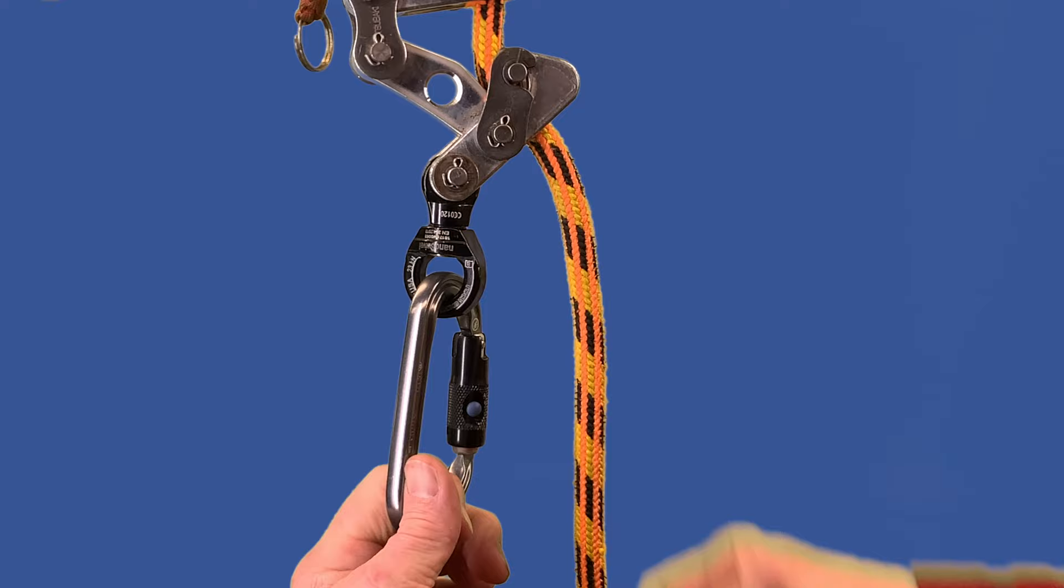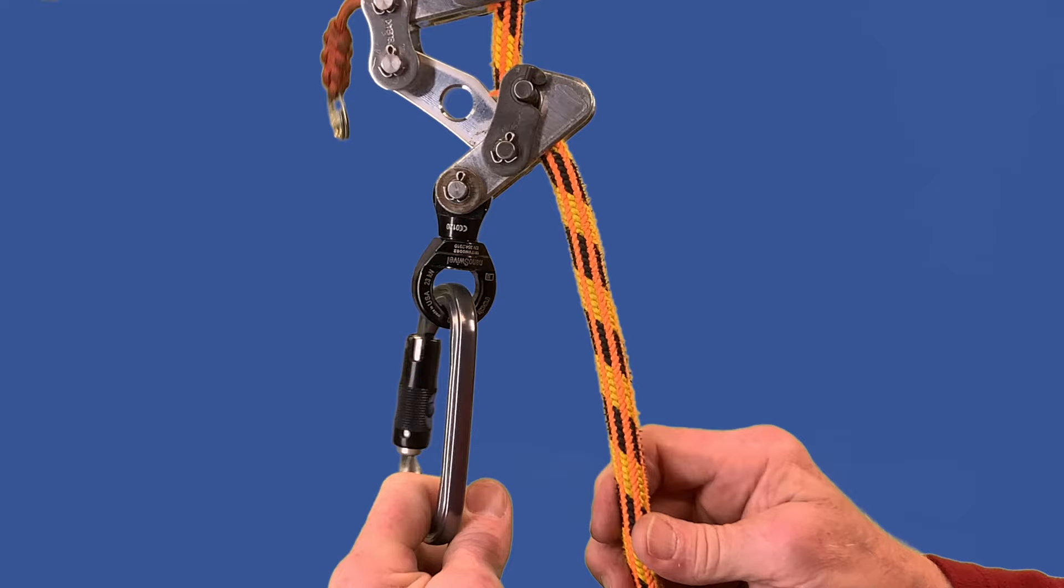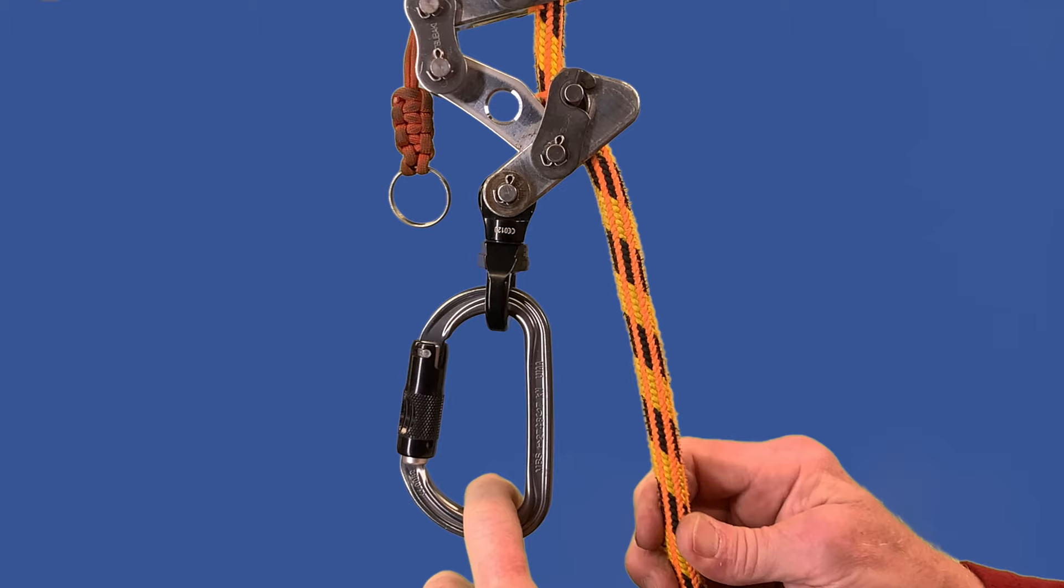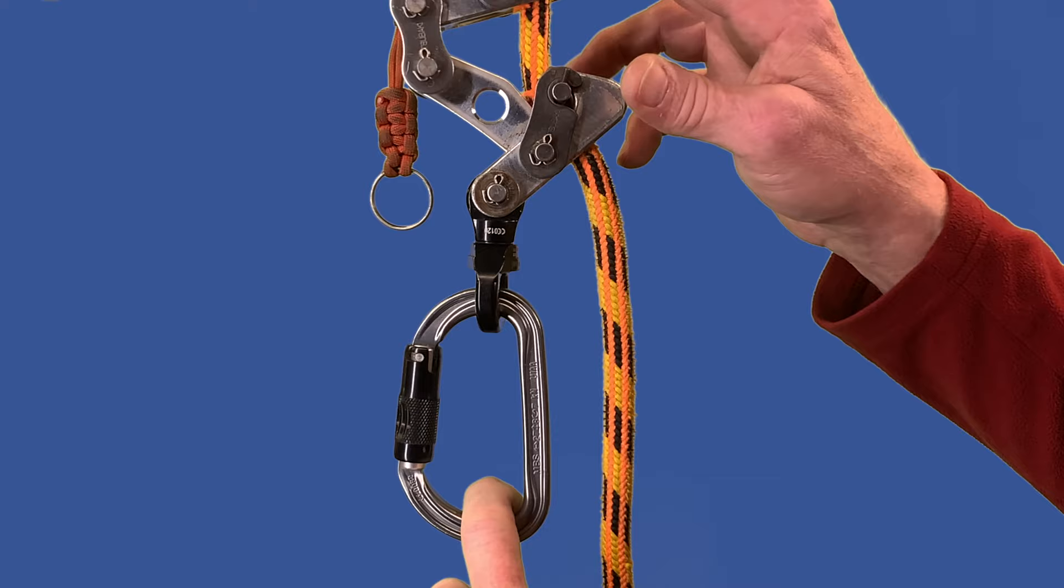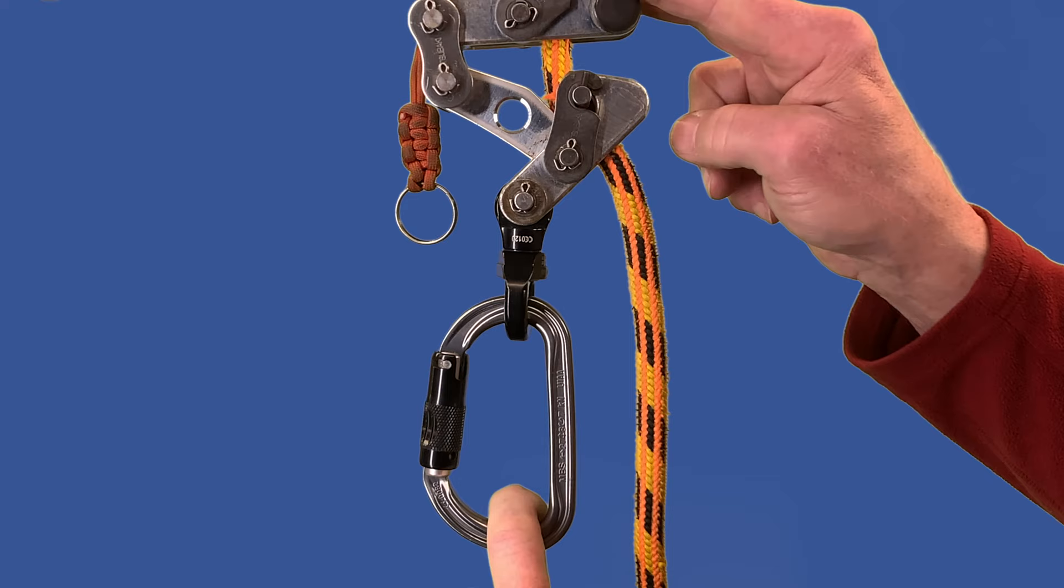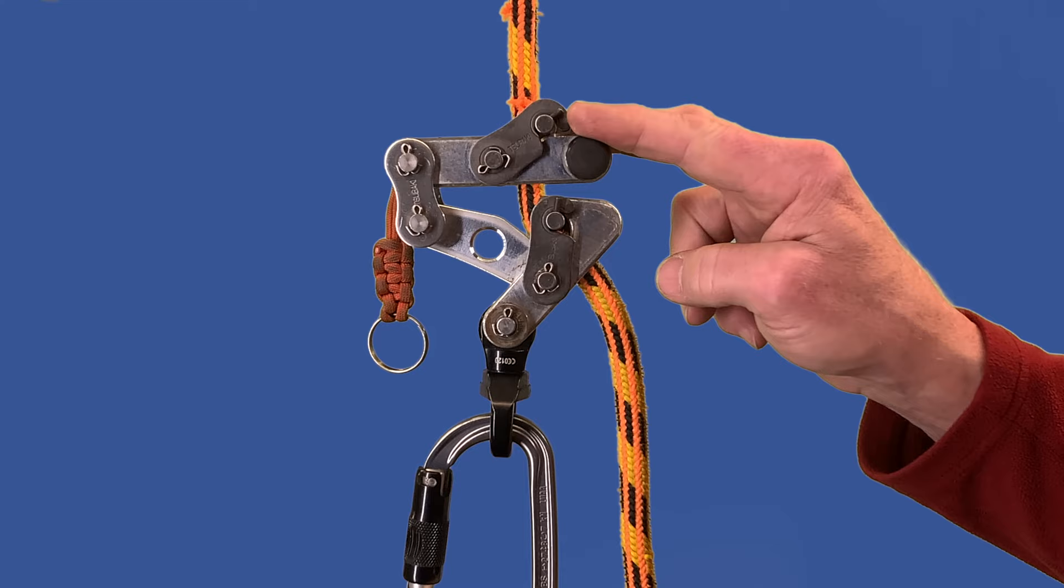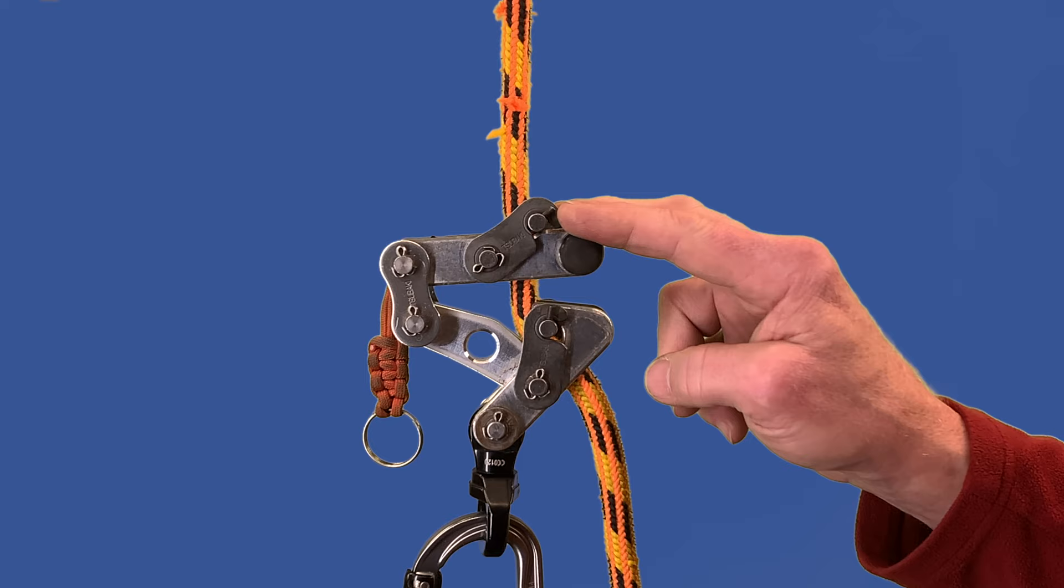Progress capture devices aren't really anything new to the world of climbing, but progress capture devices that allow you to descend are fairly new. This one adds the ability to descend by grabbing this upper arm and pulling it down. That releases the pressure on the rope and your body weight will start taking you down the rope. The rate of descension is directly proportional to how much pressure you apply to this upper arm.